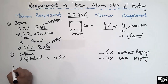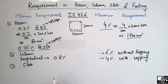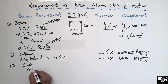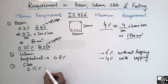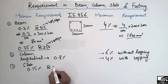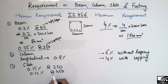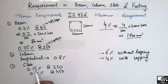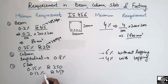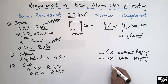The third structural member is the slab. For the slab, the minimum reinforcement is 0.15 percent of the area of the slab if we are using Fe250 grade steel, and 0.12 percent if we are using Fe415 grade steel. So if using Fe250, provide a minimum of 0.15 percent; if using Fe415, the minimum is 0.12 percent. The maximum reinforcement for the slab is 4 percent of the slab area.